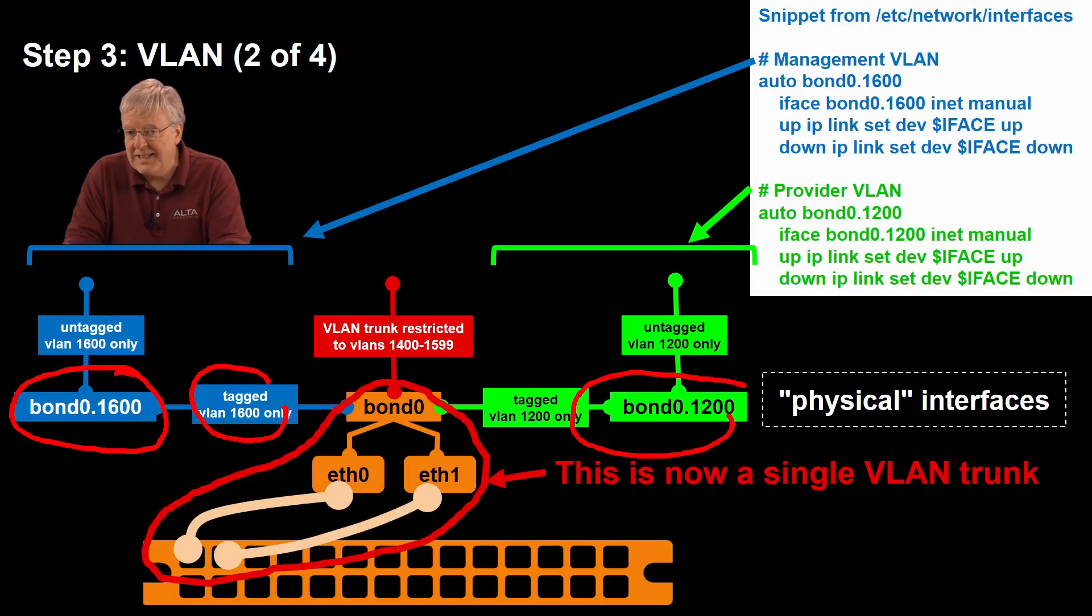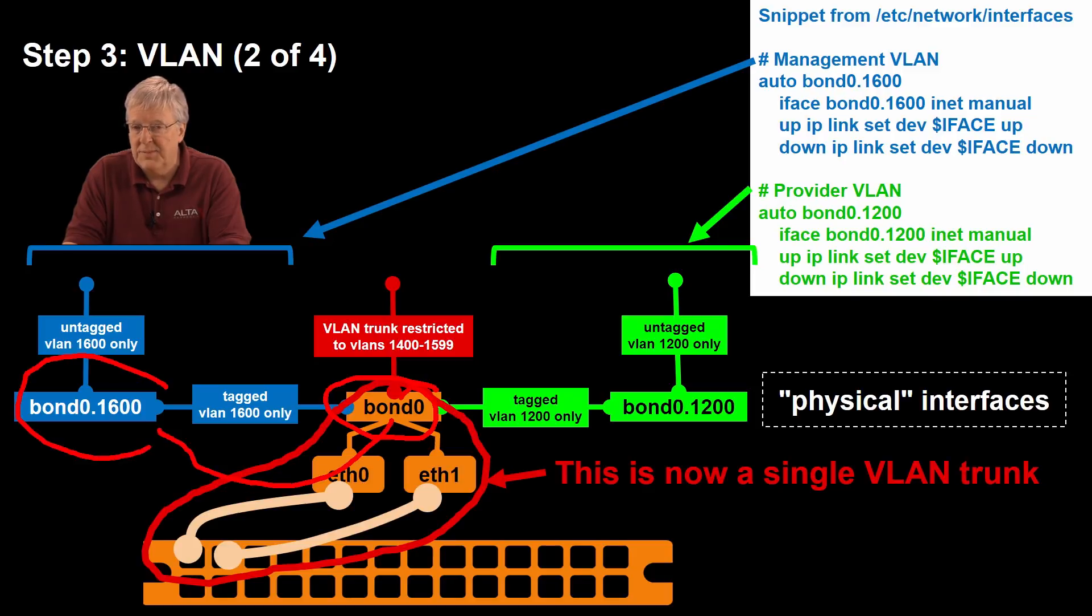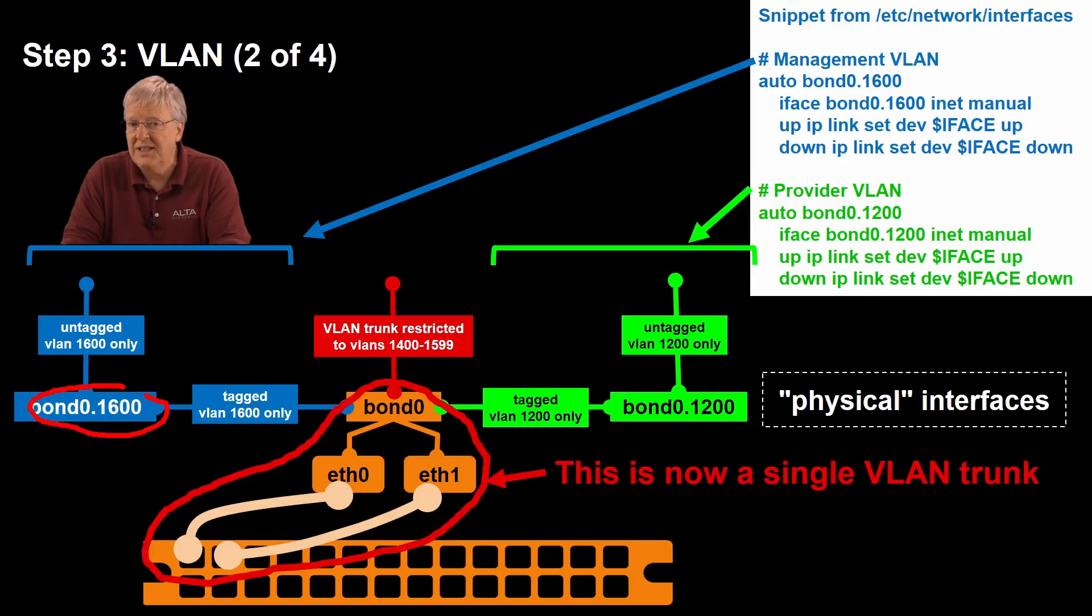You don't get any choice there. Whatever you named this interface, the sub-interface must take that name. And then you do a .1600. I will say that if you choose to actually name this some strange name like management, you can. But I think you wind up making it difficult down the road. So, I stick with this convention. I just think it makes it a lot easier. As a result of doing this, the moment we create a bond 0.1600 interface, any traffic for VLAN 1600 is going to be sent this way.